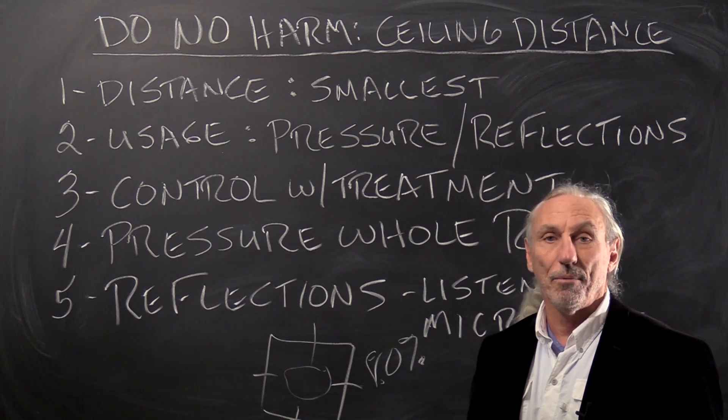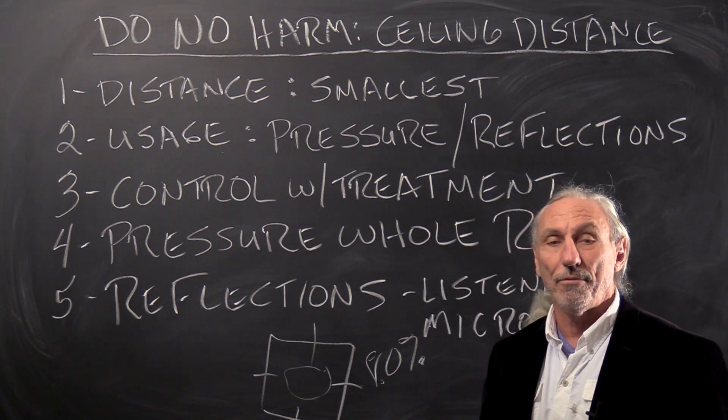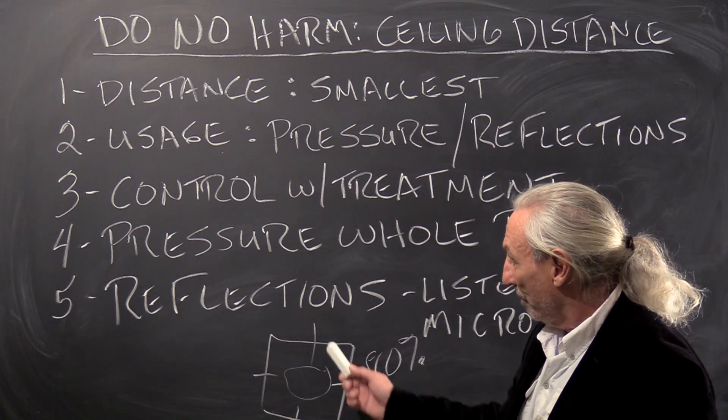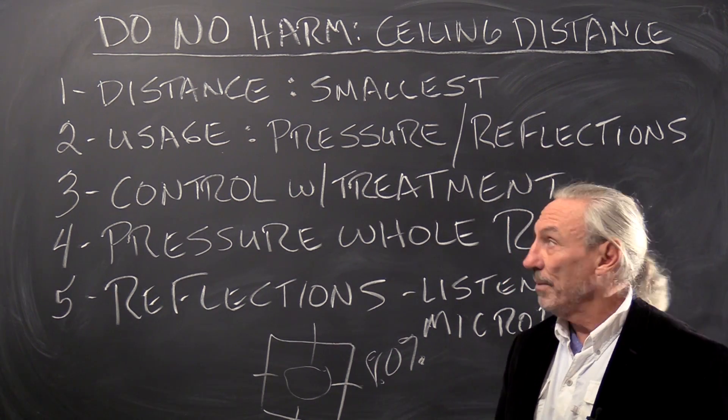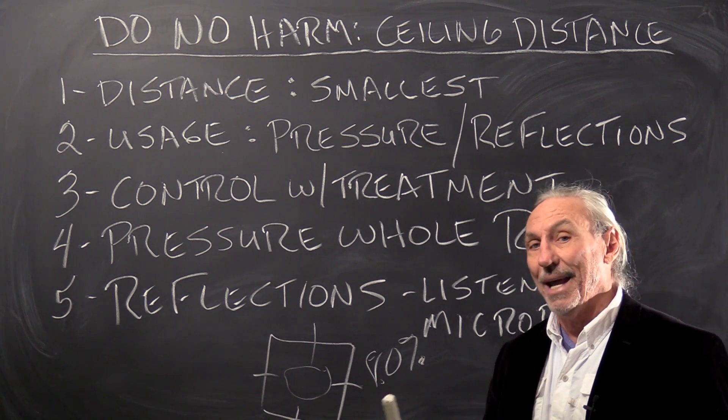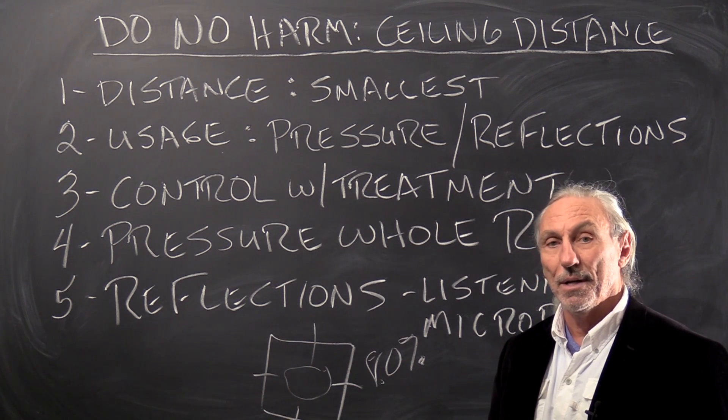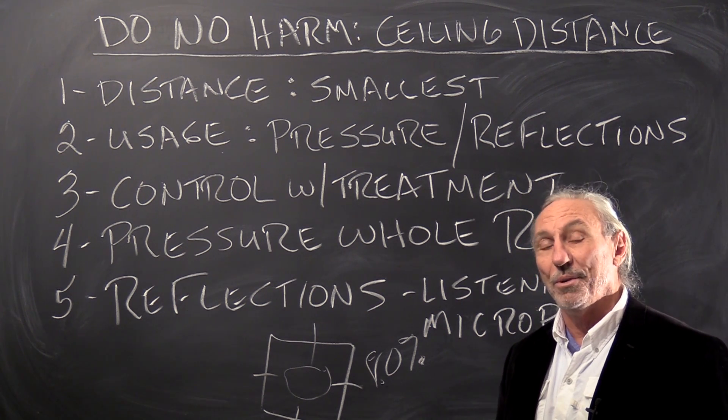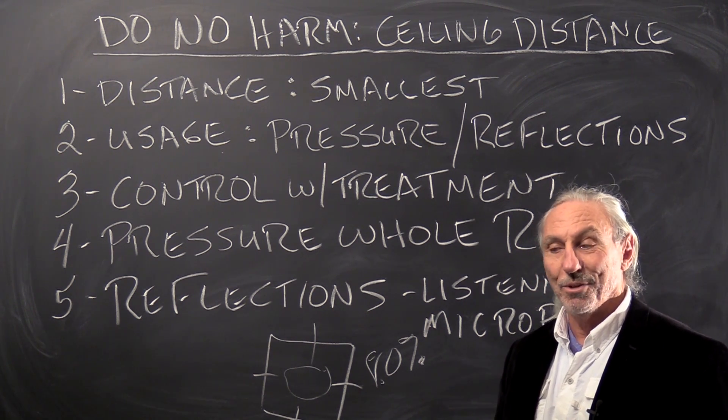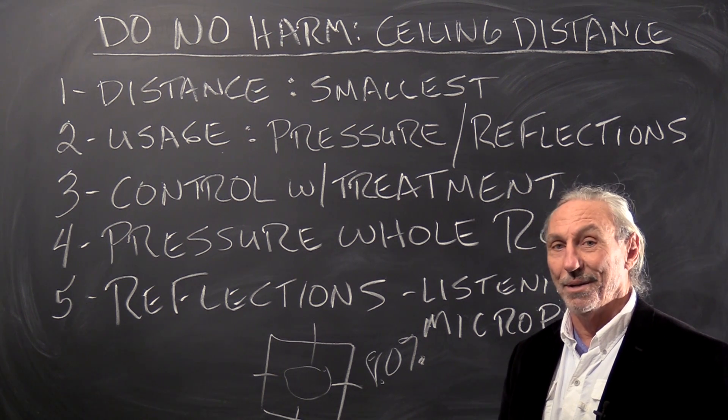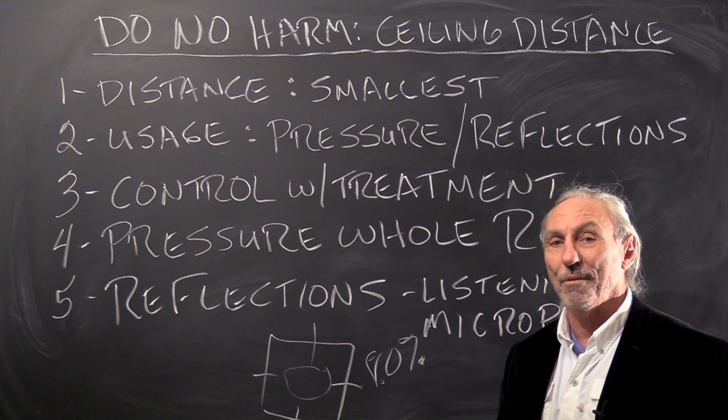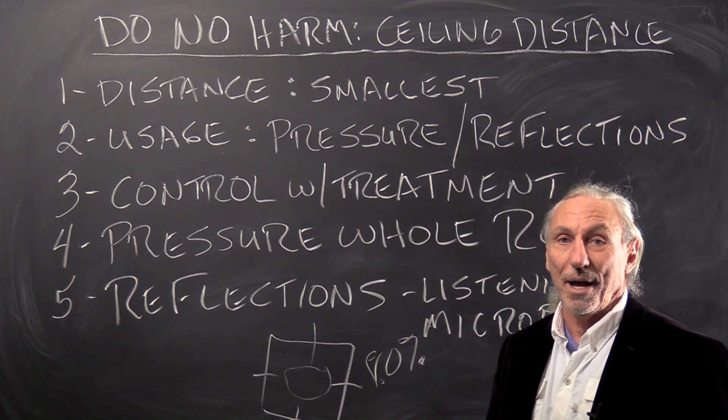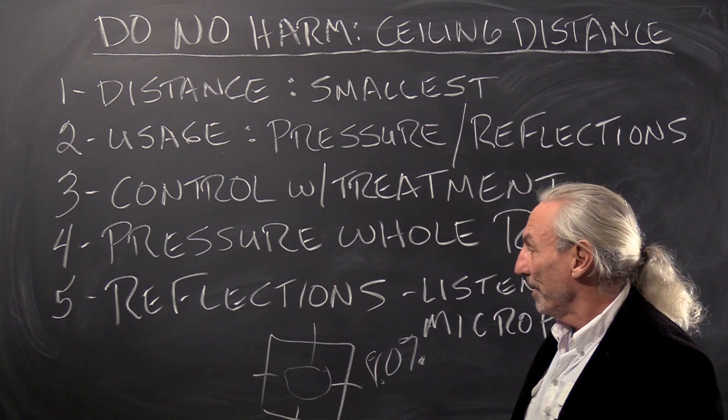And then if you can't, then we can treat it. Unfortunately, with eight foot, we're really limited to what we can treat. Because we don't want to make things worse. Remember, do no harm. We don't want to add eight, ten, twelve inches of treatment to the ceiling. Two things will happen. Now we're at seven foot. So we've created a whole other set of problems. So the treatment has to work really hard. And there's ways we can do that, especially with our diaphragmatic technology. And then the second problem is the ceiling may collapse from the weight. So you have to be really careful here.